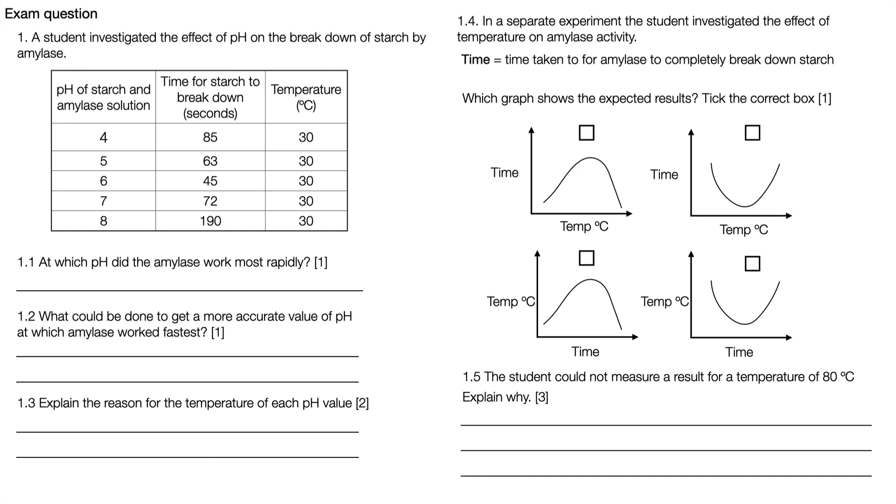So question number one. A student investigated the effect of pH on the breakdown of starch by amylase and we can see a table of results there. For 1.1 we can see that the question says at which pH did the amylase work most rapidly, and that's for one mark.